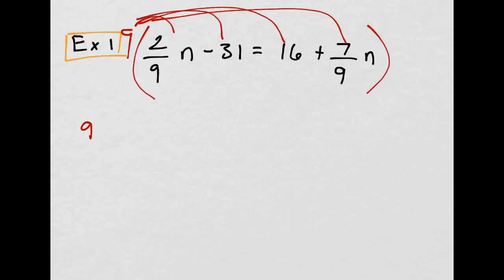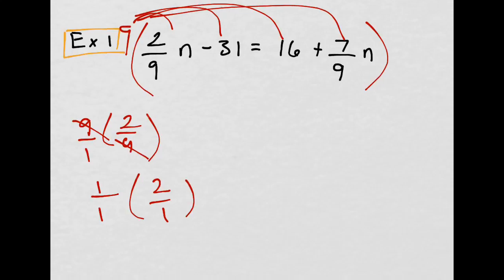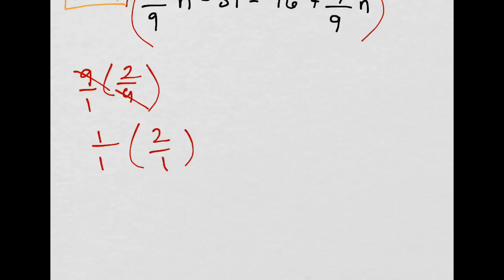And just remember, 9 times 2 over 9. How do you multiply fractions? Well, 9 is the same thing as 9 over 1, and I could just multiply, I get 18 over 9, and then reduce that, or I can cross-cancel. And when you have the same thing on the top and on the bottom, they cancel out to 1, so 9 over 9 is just 1. I'm over-explaining this, but this is just to remind everyone.